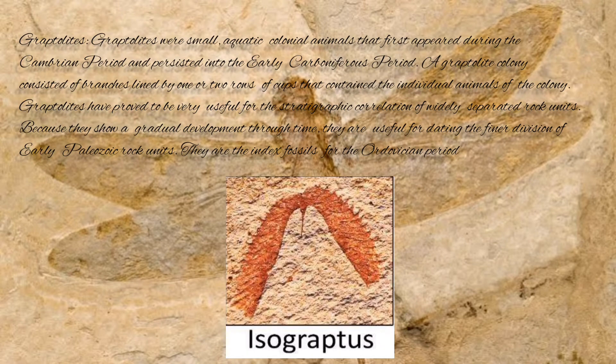Graptolites were small aquatic colonial animals that thrived during the Cambrian period and persisted into the early Carboniferous period. A graptolite colony consisted of branches lined by one or two rows of cups that contained the individual animals of the colony. Graptolites have proved to be very useful for geographic correlation of widely separated rock units because they show a gradual development through time. They are useful for dating the early Paleozoic rock units, and are the index fossils for the Ordovician period.